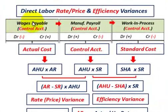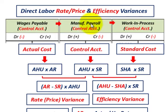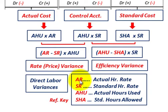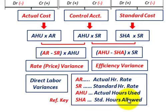Now let's move over to direct labor rate and efficiency variances. For direct labor, we have wages payable at the actual cost of direct labor, which flows into a manufacturing payroll account — a control account — and then flows into work in process at the standard cost. The reference key: AR is the actual hourly rate, SR is the standard hourly rate, AHU is actual hours used, and SHA is standard hours allowed.